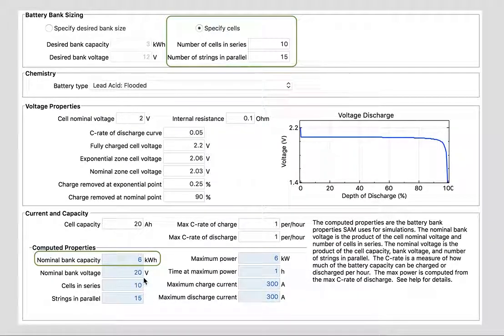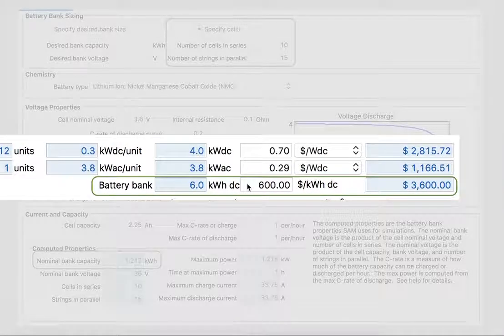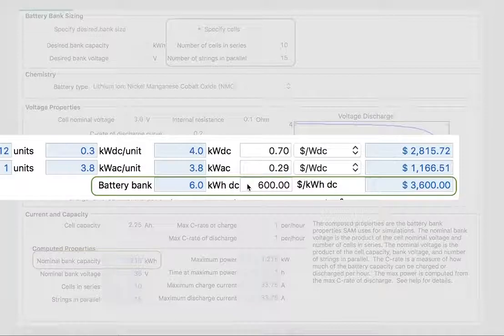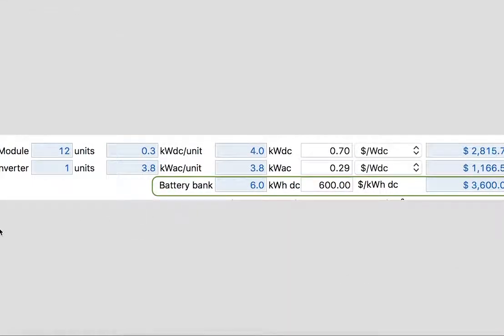These 6 kilowatt hours will go into the costing—it will go into the system costs. Let's see how that looks. Right here, I've got system costs of 6 kilowatt hours DC times 600 dollars per kilowatt hour DC, which gives me a $3,600 system cost for the battery bank. I've actually just picked out the default residential photovoltaic system for comparison.